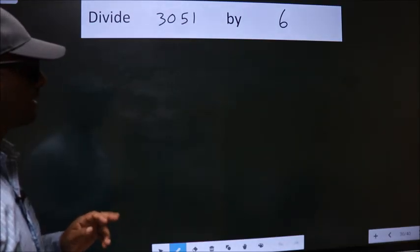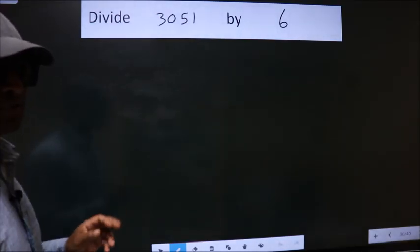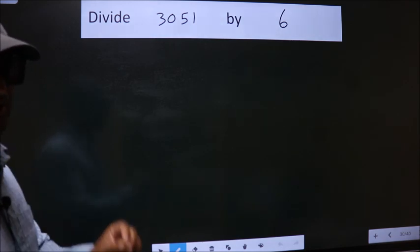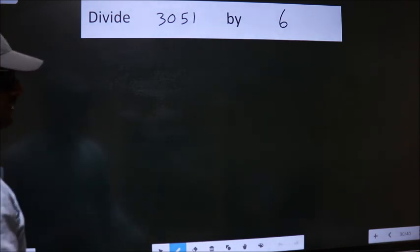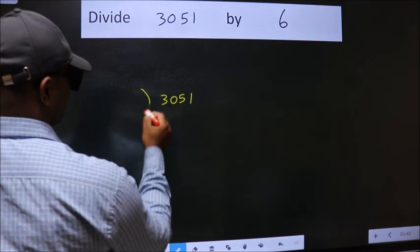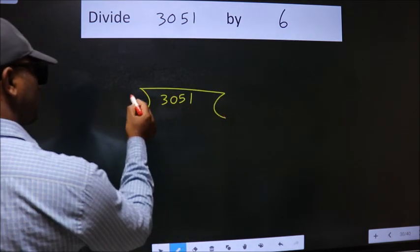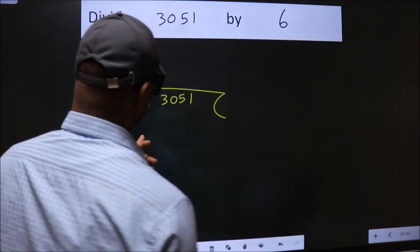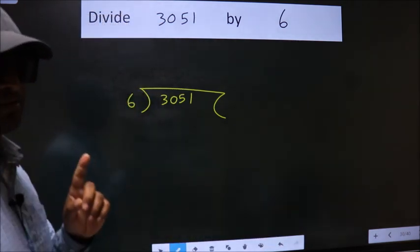Divide 3051 by 6. To do this division, we should frame it in this way. 3051 here, 6 here. This is your step 1.